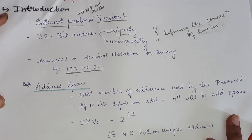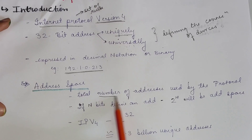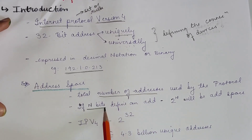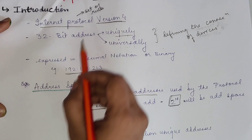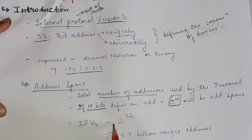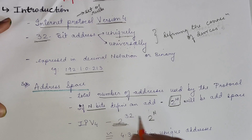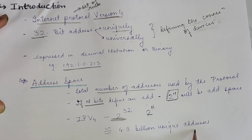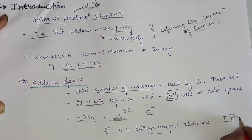Address space is the total number of addresses used by the IPv4 protocol. If we have n bits, the address space is 2 raised to n. Since IPv4 is a 32-bit address, the IPv4 address space is 2 raised to 32, which gives us approximately 4.3 billion unique addresses. However, this is not sufficient for more than 8 billion people today, making IPv4 increasingly inefficient. That is why IPv6 has come into the picture.